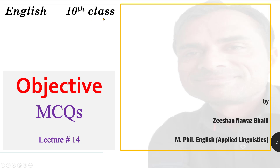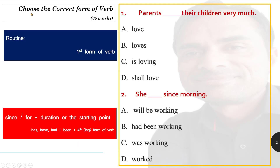English 10th class objective MCQs, lecture number 14. Choose the correct form of verb. Option number 1: parents dash their children very much. Options are: love, loves, is loving, shall love. Remember that option number 1 is a routine sentence. In routine sentences, first form of verb is used. So here the answer is 'love' — parents love their children very much.